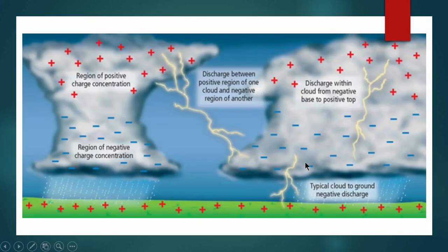How does a thunderstorm occur? Usually in the clouds there are positive and negative charges. When positive and negative charges react with each other, sparks are ignited. When amplified, these sparks become thunder — that is how thunder is created.